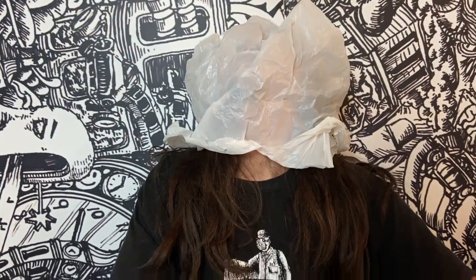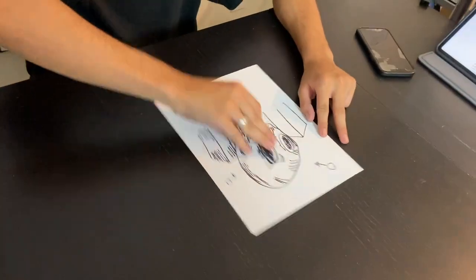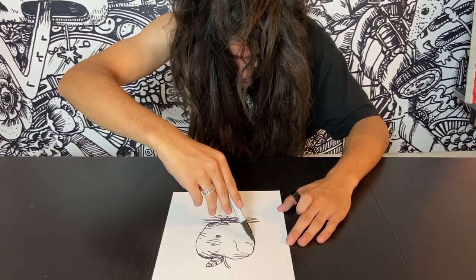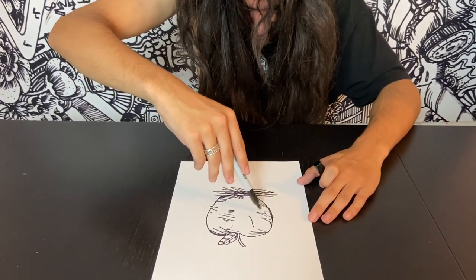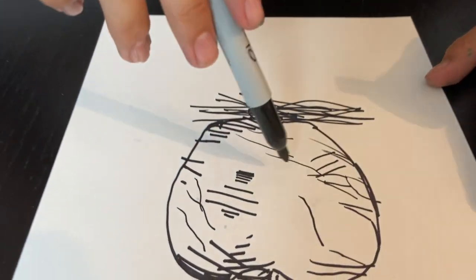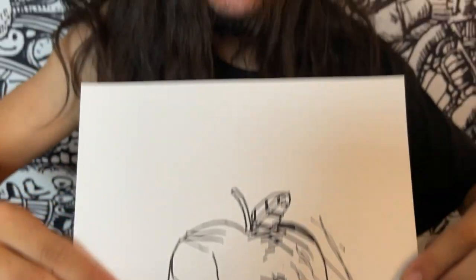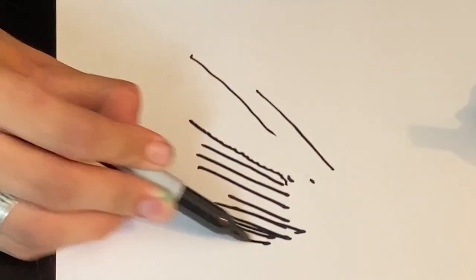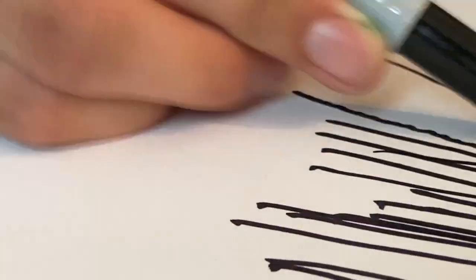This person does not understand how shadows and light works, shading without considering where the light is coming from and how it creates shadows, turning the illustration into a confusing mess of random shadows that make no sense. This person is very sloppy, not paying attention to the order of their lines, creating a chaotic, inconsistent mess of lines that leaves the work of art looking amateurish.